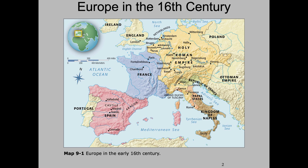First we're going to look at a map of Europe in the early 16th century. You can see that it looks a little bit different than the map we see today. We've got the prominence of the Holy Roman Empire and France. Most of the work we're going to look at comes from what we think of as Italy, so Rome and Florence. But you can also see Spain and England.